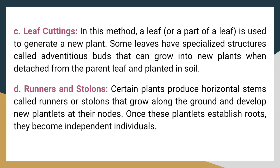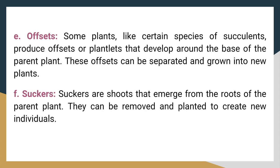Runners and stolons. Certain plants produce horizontal stems called runners or stolons that grow along the ground and develop new plantlets at their nodes. Once these plantlets establish roots, they become independent individuals. Offsets. Some plants, like certain species of succulents, produce offsets or plantlets that develop around the base of the parent plant. These offsets can be separated and grown into new plants.